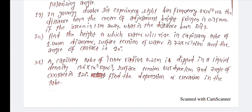A capillary tube of inner radius 0.25 mm is dipped in a liquid of density 14.6 into 10 to the 3 kg per cubic meter. The surface tension is 64.5 into 10 to the minus 2 Newton per meter and the angle of contact is 120 degrees. Find the depression or elevation in the tube.